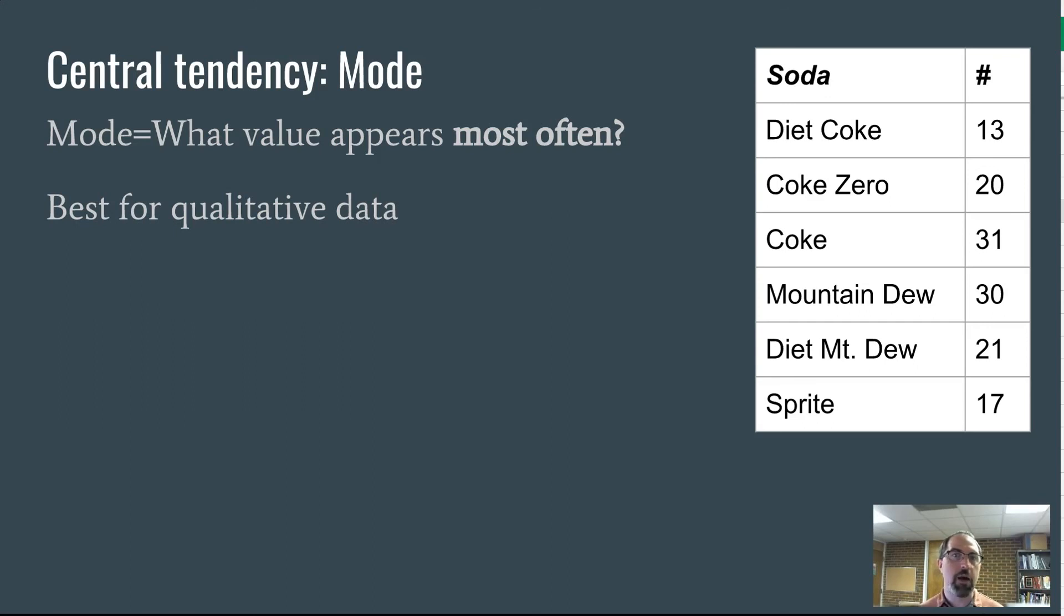Categorical data, data that's text and not numbers. So what if instead of the number of sodas you drank, we asked which soda did you drink? And we ended up with this tally: diet Coke, Coke Zero, Coke, Mountain Dew, diet Mountain Dew, and Sprite. You can't average Coke and diet Coke. You can't add those two things up, but what you can do is say which one of these showed up most often?